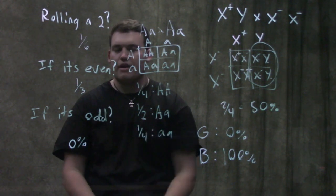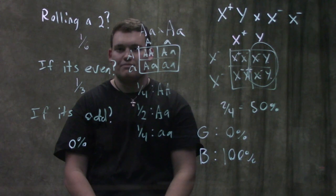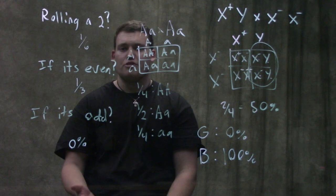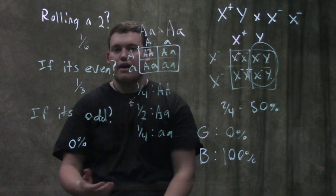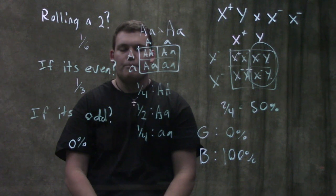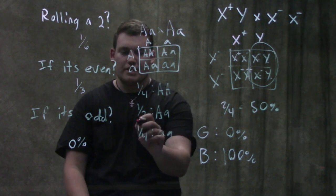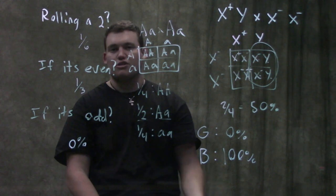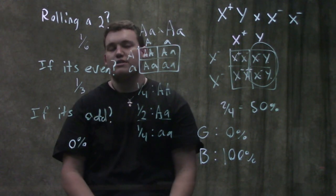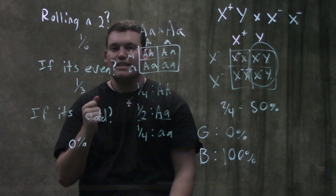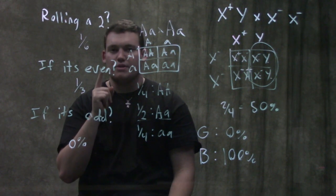Most of you are saying, 'the chance it's a carrier is one-half' — especially if the professor isn't specifically discussing conditional probability at the moment. Carriers are Aa — they don't have the condition, but they can pass it on. So you look at this and say it's a one-half chance, pick that answer choice, and move on. Don't be that person.